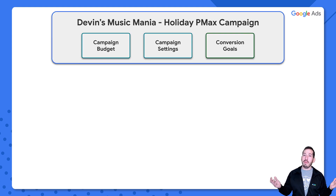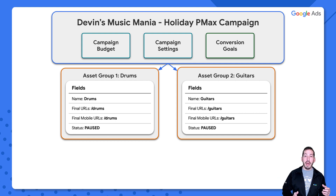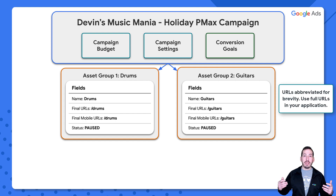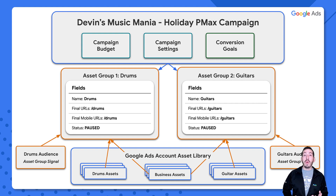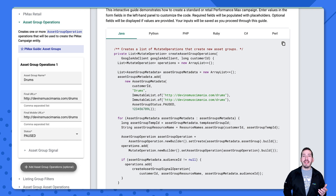Let me introduce you to my fictional store, Devin's Music Mania — we sell instruments. We have campaign settings and conversion goals at the high level. I have two different product types I want to target: drums and guitars. So I'm going to create a different asset group for each one. Each has a different name and different final URLs it's targeting. We also attach assets to each one. Some assets might be the same, like our business assets, or we might have specific assets related to one asset group or the other, in which case we won't attach them to both. If we have audiences for these specific product types, we can associate them at the asset group level.